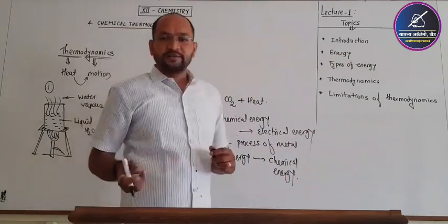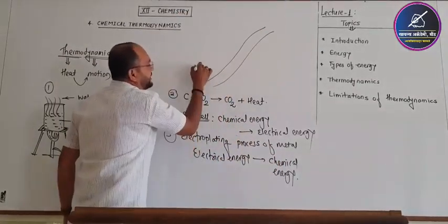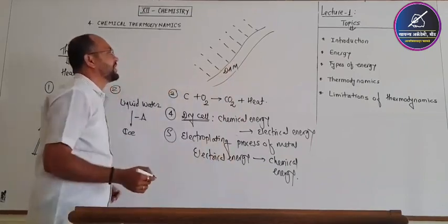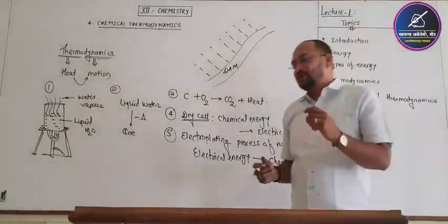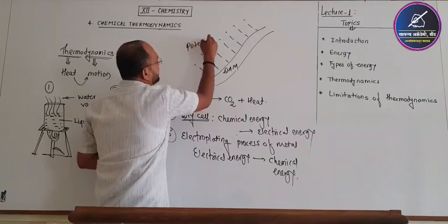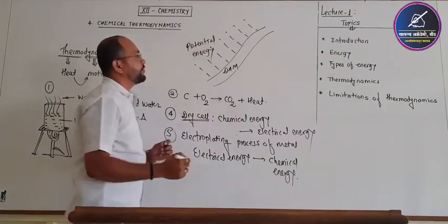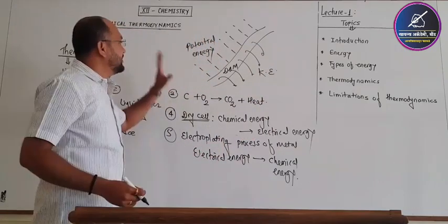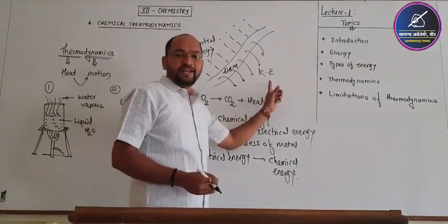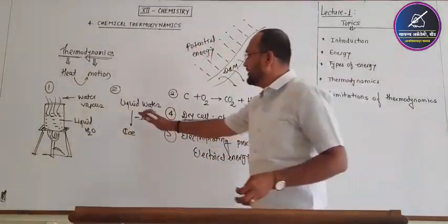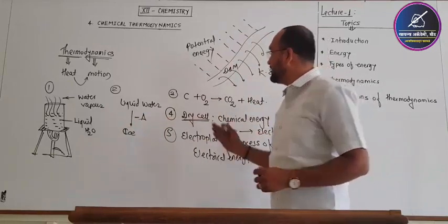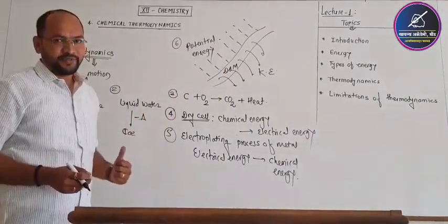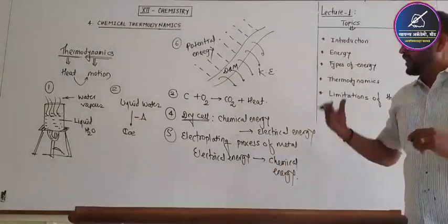Consider one more example: water flowing in a dam. Due to its position or height in the dam, the water possesses potential energy. When water flows through the dam, it gets converted into kinetic energy due to its flow. So the potential energy stored in the water gets converted into kinetic energy in the flowing water. In examples 4, 5, and 6, there is conversion of energy from one form to another. All these topics come under thermodynamics, because here either energy conversions occur or heat is in motion.